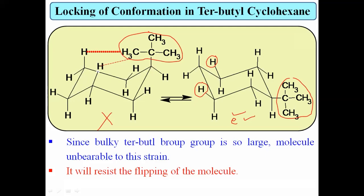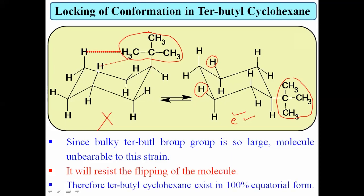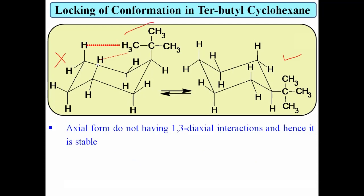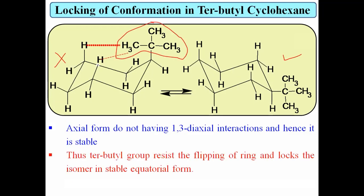The equatorial form does not flip into the axial form, because the axial isomer is highly unstable. Therefore, tertiary butyl cyclohexane exists in 100% equatorial form. This is due to the bulky tertiary butyl group, which resists flipping of the ring and locks the molecule in the stable equatorial form.